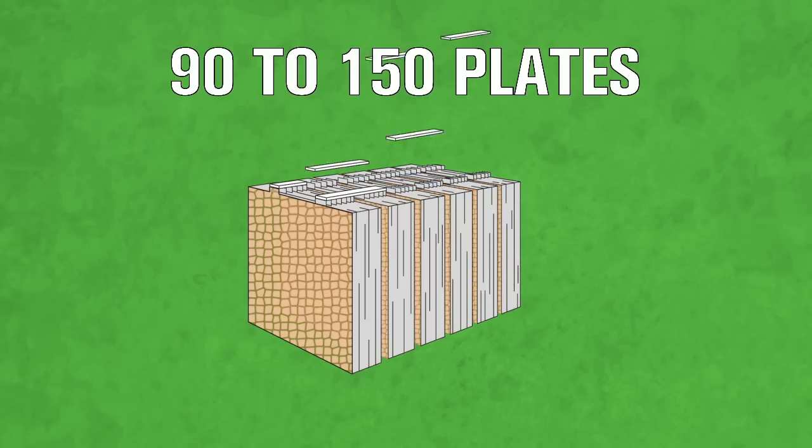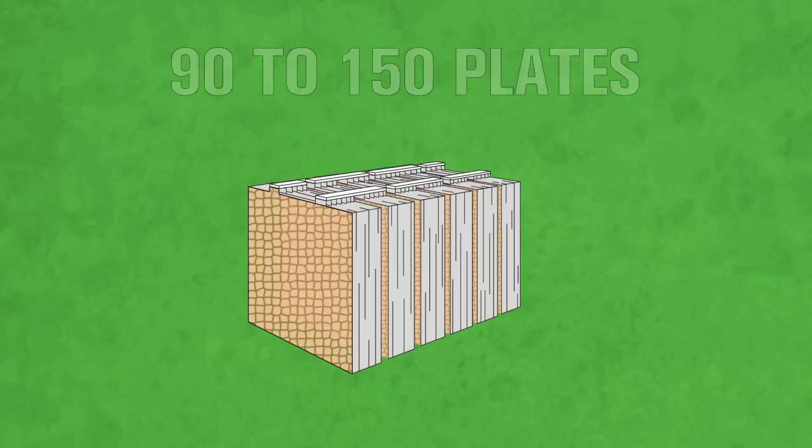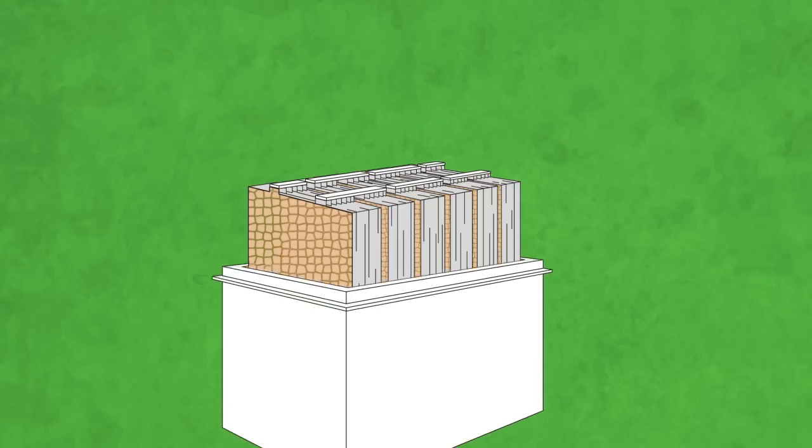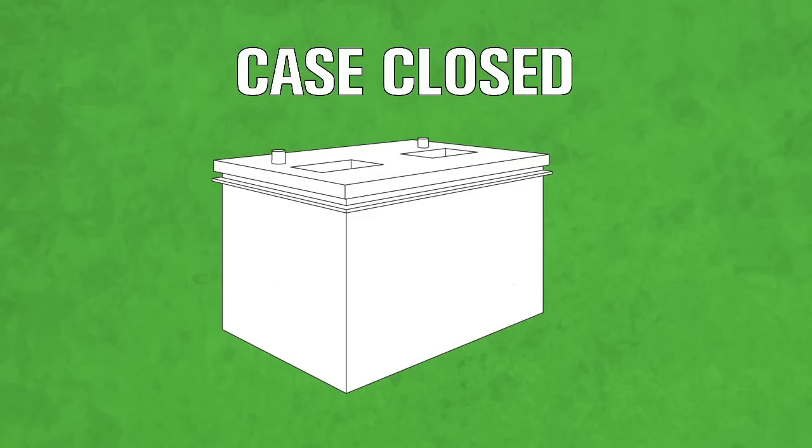To ensure electricity can flow within the battery, the different cells, plates, and grids are connected. Now, the battery's components go inside the battery case.